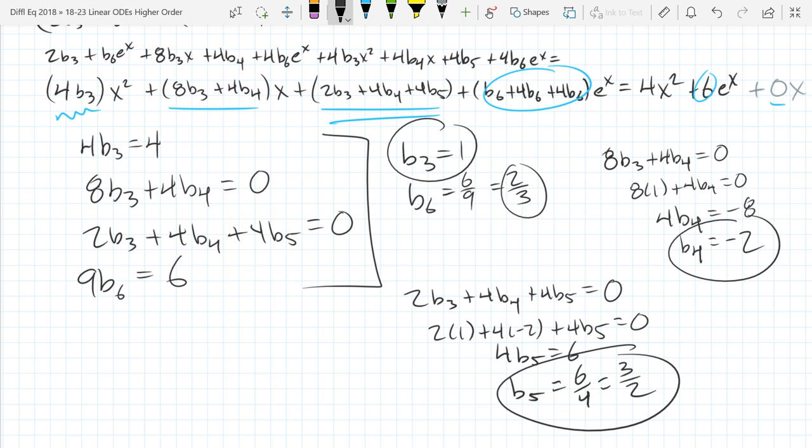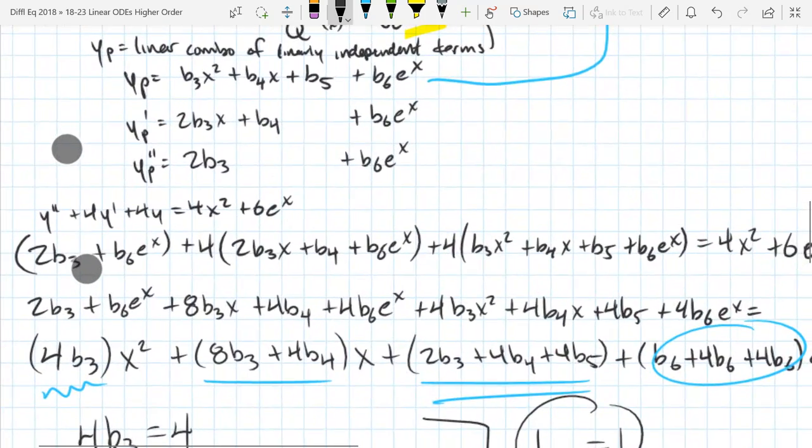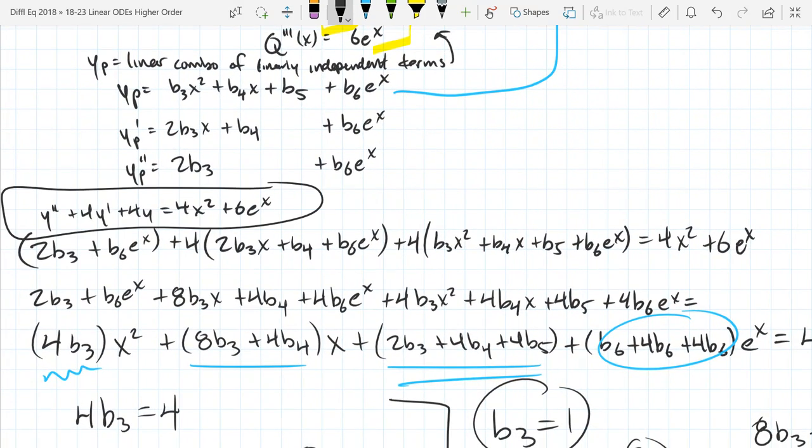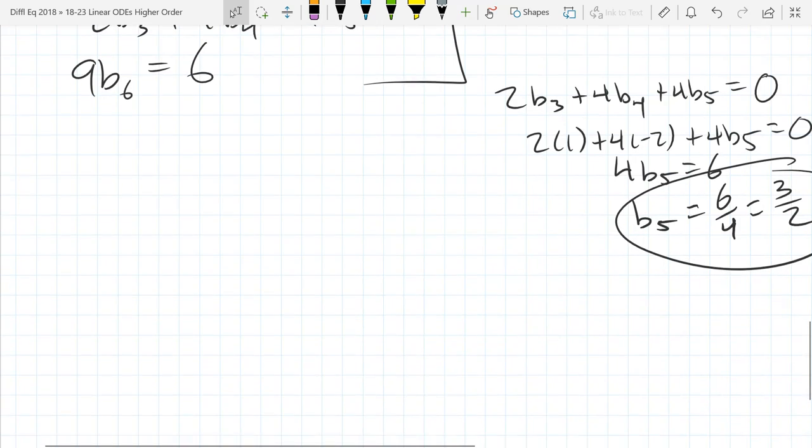So you should have four values in order. They're 1, negative 2, 3 halves, 2 thirds. Any questions on those numbers right there? So assuming we didn't make a mistake, what we just did was pick the coefficients that turn our YP into the solution to our ODE. And it really depended on the QX function on the right side. So, we're ready to write out YP properly.